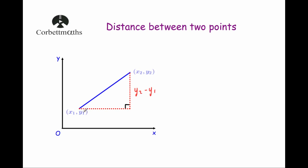In terms of the length of this other line, this is the difference in their x-coordinates, so we would get x2 and x1 and take them away. And now we're going to use Pythagoras' theorem to work out the length of the hypotenuse. Pythagoras' theorem is a squared plus b squared equals c squared. Let's call the length of the hypotenuse d as the distance between the two points, and substitute these into the formula.